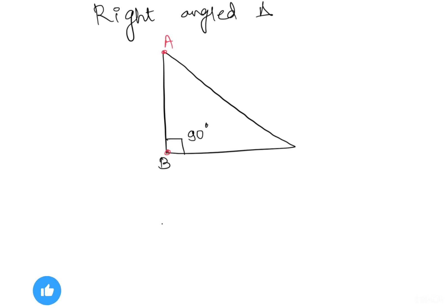This is triangle ABC. Here angle B equals 90 degrees and we have some special names to the sides of this right angle triangle. The side which is longest, opposite the 90 degree angle, is called the hypotenuse.